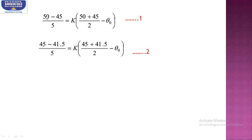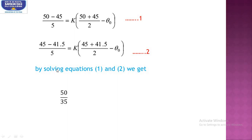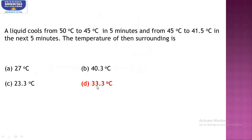Dividing equation 1 by equation 2, the 5s and k's cancel: 5/3.5 = (95 − 2θ₀)/(86.5 − 2θ₀), written as 50/35. By cross-multiplication, θ₀ = 33.3°C. The answer is 33.3°C, and option D is the correct one.